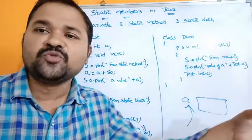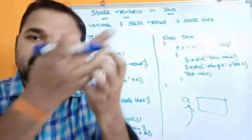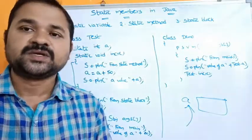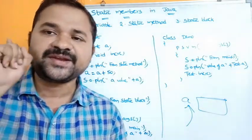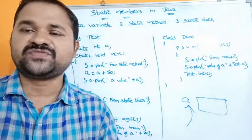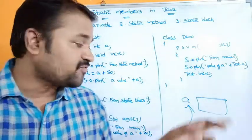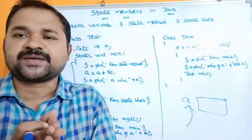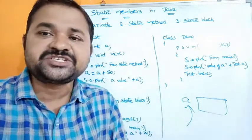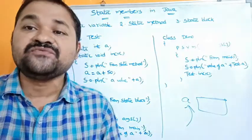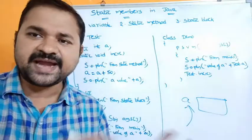Coming to instance variables, each object has its own memory: obj1 has its own variable, obj2 has its own, obj3 has its own. So that is about memory allocation for a static variable — whenever a class is loaded into memory, the memory will be allocated for the static variable only once. When can we use the static variable? If the value of the variable is constant for all objects, then we use the static variable. If the value varies from one object to another, we use an instance variable.